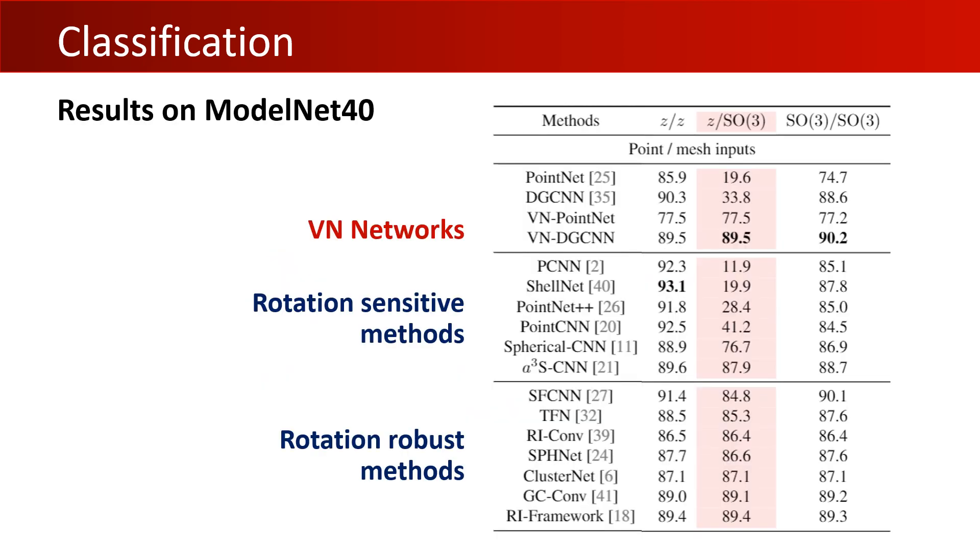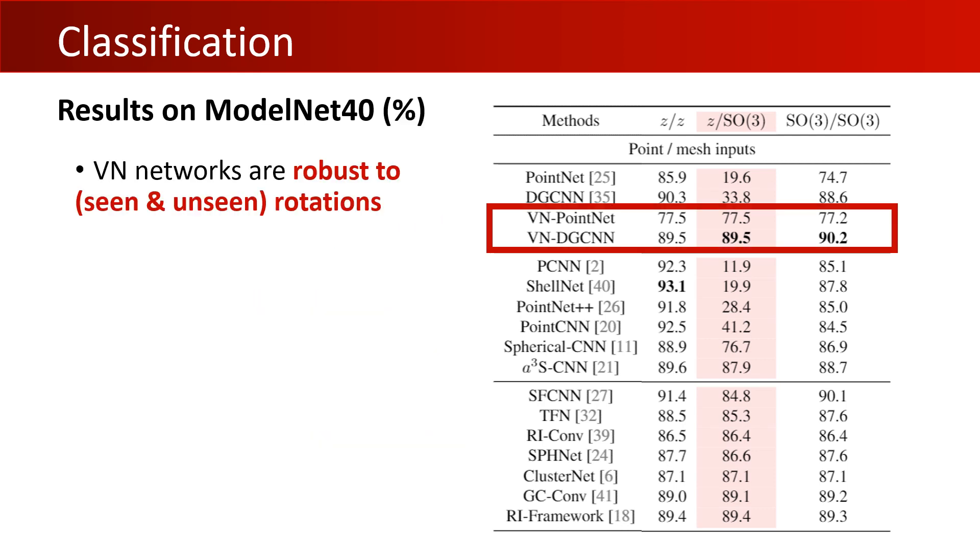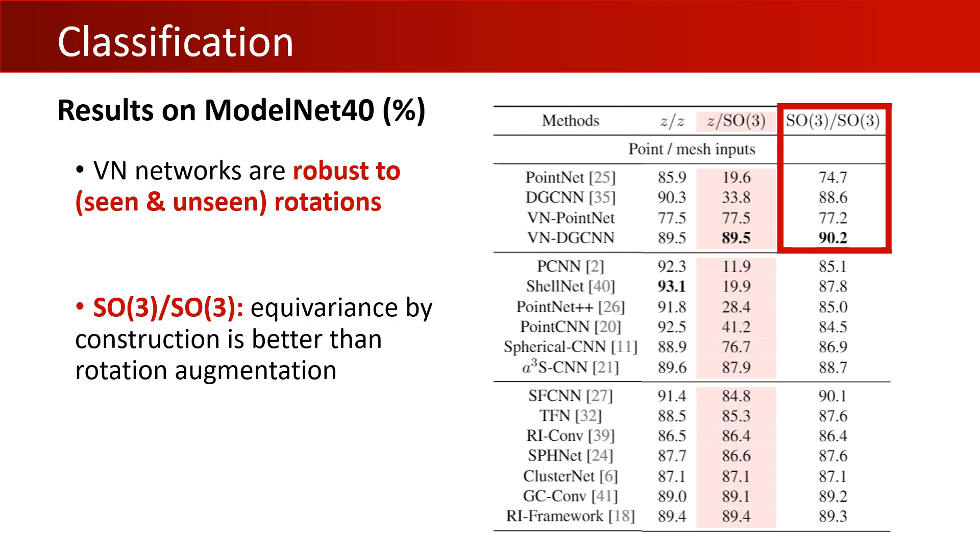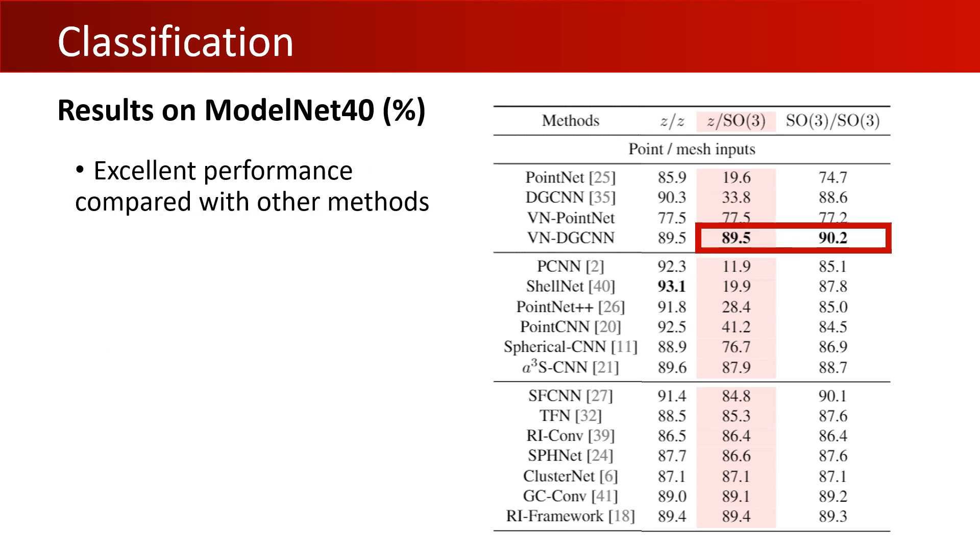Here are our classification results on ModelNet40. We compare our VN networks to other rotation-sensitive methods and rotation-robust methods, which take only point coordinates as inputs. Compared with their non-equivariant counterparts, the VN networks attain consistently good results on all three settings, which indicates their robustness over rotations, especially in the z/SO3 case, where the test set contains unseen rotations in the train set. Even in the SO3/SO3 case with abundant train time data augmentation, the rotation-sensitive networks cannot perform as well as the equivariant inductive bias in VN networks. On the other hand, in the z/SO3 and SO3/SO3 cases, the VN-DGCNN outperforms all other equivariant or invariant methods with only point coordinate inputs.